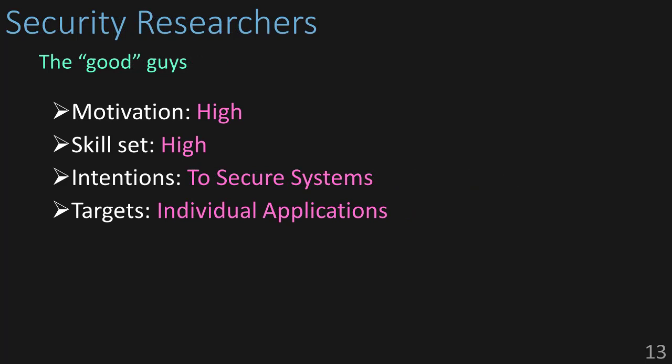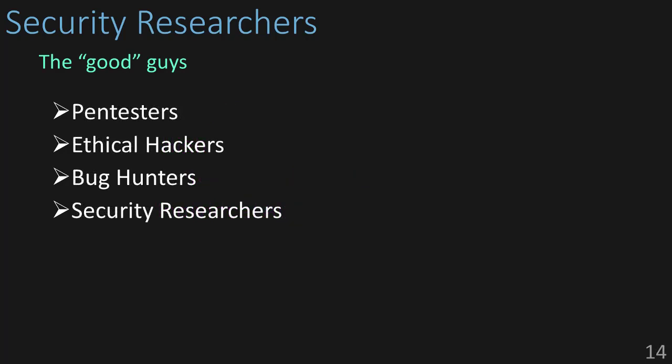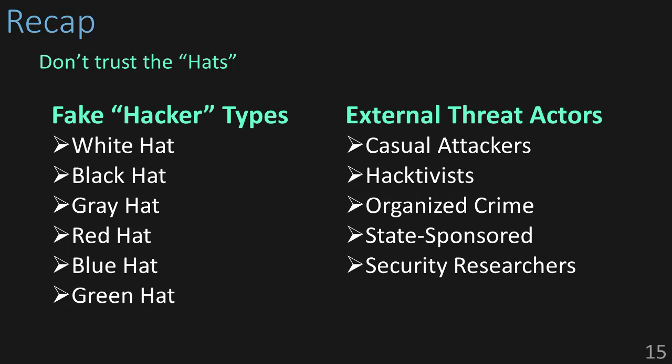And then finally we have security researchers. This is where many of the white hats and gray hats fit in. They're highly motivated, have a high skill set, and have a protective intent, trying to break into targets to learn how to better defend them. They primarily target individual applications as opposed to whole companies. Security researchers include pen testers, ethical hackers, bug hunters, and of course, security researchers. To wrap it up: the six hacker types that don't exist are white hat, black hat, gray hat, red hat, blue hat, and green hat. The ones that do exist are better known as external threat actors, including casual attackers, hacktivists, organized cybercriminals, state-sponsored, and security researchers.